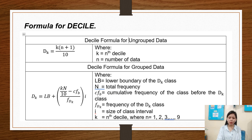This is the formula for decile. The decile formula for ungrouped data: D sub K is equal to K times (N plus 1) over 10, where K equals the decile number and N is the number of data.